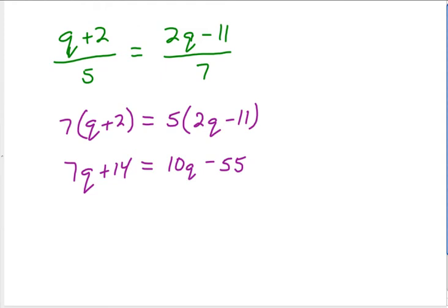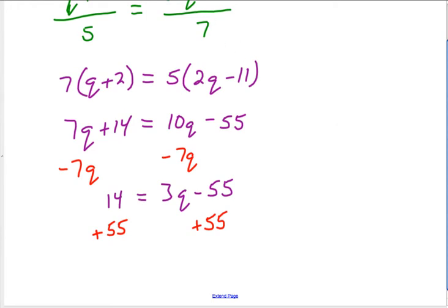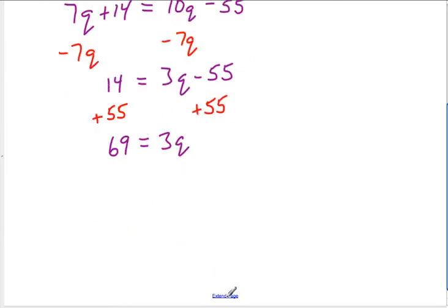we get 7q plus 14 equals 10q minus 55. Using the subtraction property of equality to get rid of the q on this side, we're left with 14 equals 3q minus 55. Adding 55 to both sides, we've got 69 equals 3q. If we divide by 3, we will have our answer. So q is going to equal 23.